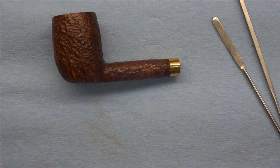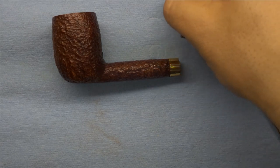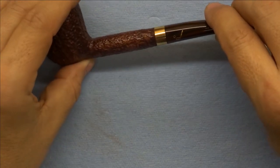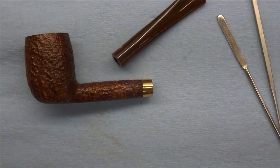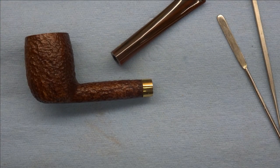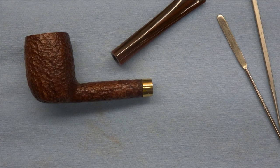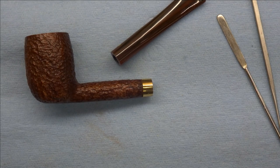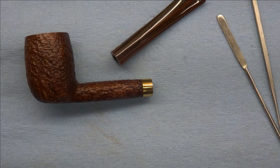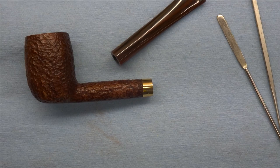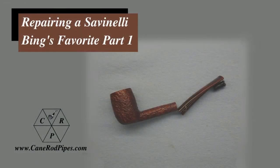So at this point, we are done with the stummel, and all we need to do is rebuild the tenon, and put the pipe back together again, and I think that's going to look quite nice once it's all done. So I'm going to bring this portion to a close. Of course, in the next episode, we will be building a new Delrin tenon, gluing it in place, and putting the pipe back together, so there'll be one more episode and we will be done, and Mark in Rhode Island can get his Bing's favorite back. Thank you all for watching, thank you for your likes, your comments, your subscriptions, I really appreciate the support, and I will look forward to seeing you all in the next episode.